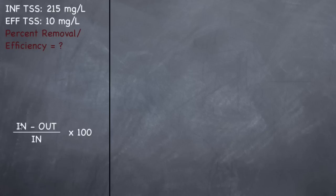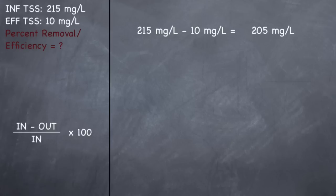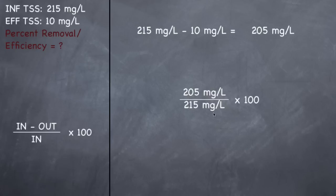We have an influent TSS of 215 milligrams per liter and an effluent TSS of 10 milligrams per liter. Plugging into the formula: the top part is 215 mg/L minus 10 mg/L, which equals 205 mg/L.